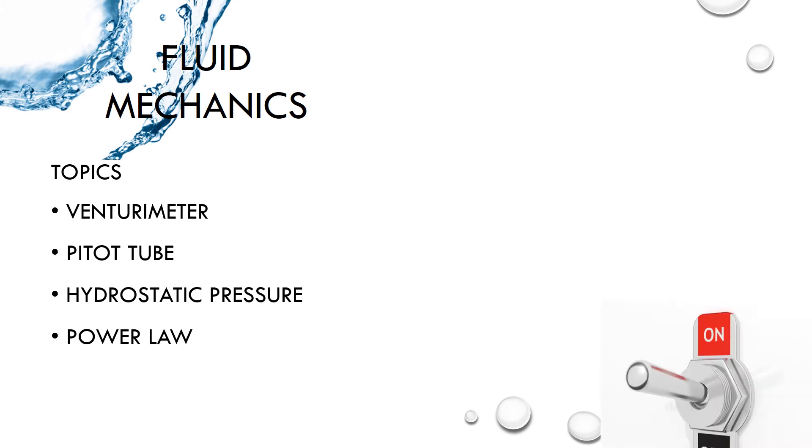However, the situation remained under control in case of Fluid Mechanics, which involved questions from venturimeter and pitot tube, and even in case of Process Dynamics and Control, which had questions from offset and PI controller. So one can estimate the base score of 5 to 7 in Fluid Mechanics and 3 to 5 in Process Dynamics and Control.